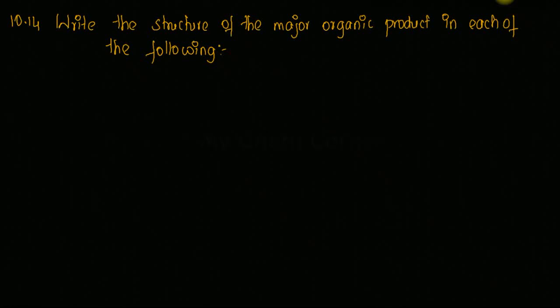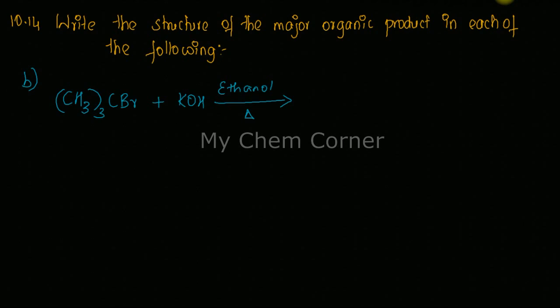In this, you're going to learn how to write the major structure for the compound. We're going to do the second question. Here we have the question: (CH3)3CBr + KOH with ethanol and heat.